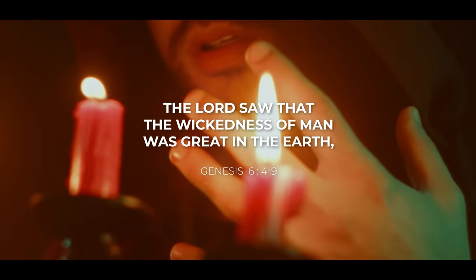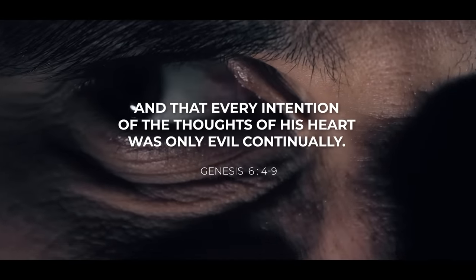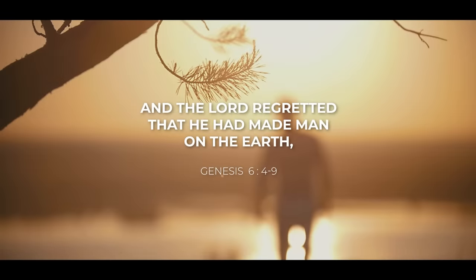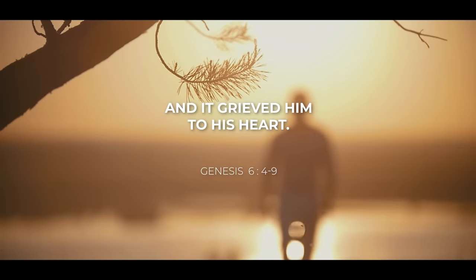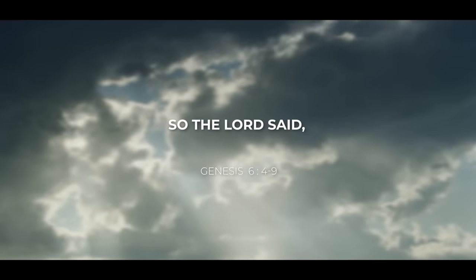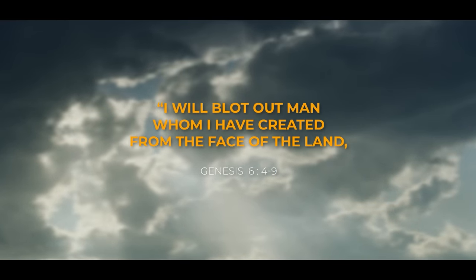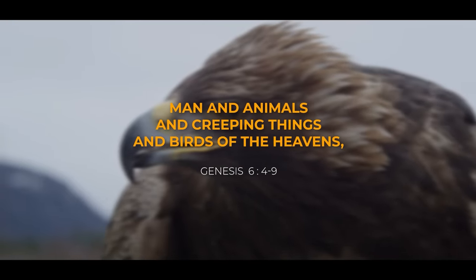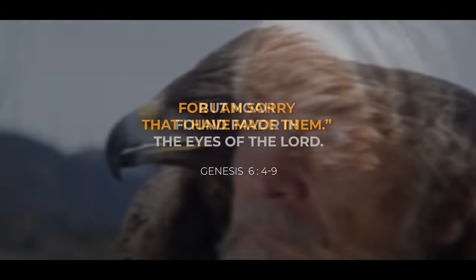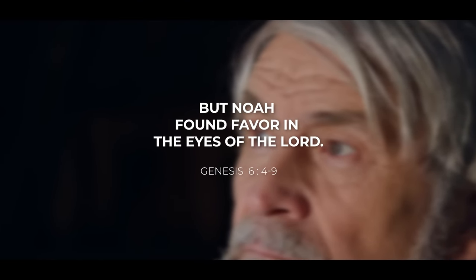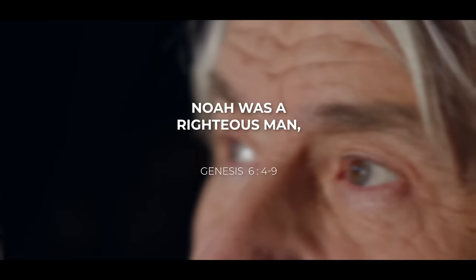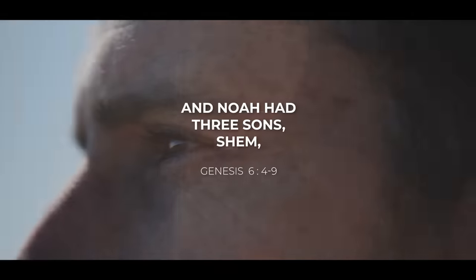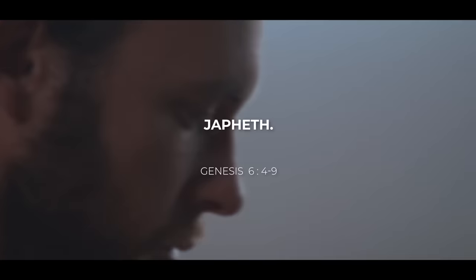The Lord saw that the wickedness of man was great in the earth, and that every intention of the thoughts of his heart was only evil continually. And the Lord regretted that He had made man on the earth, and it grieved Him to his heart. So the Lord said, I will blot out man whom I have created from the face of the land, man and animals, and creeping things, and birds of the heavens. For I am sorry that I have made them. But Noah found favor in the eyes of the Lord. These are the generations of Noah. Noah was a righteous man, blameless in his generation. Noah walked with God. And Noah had three sons, Shem, Ham, and Japheth.